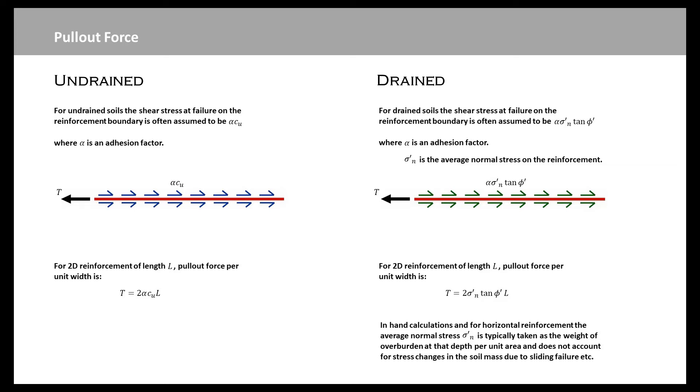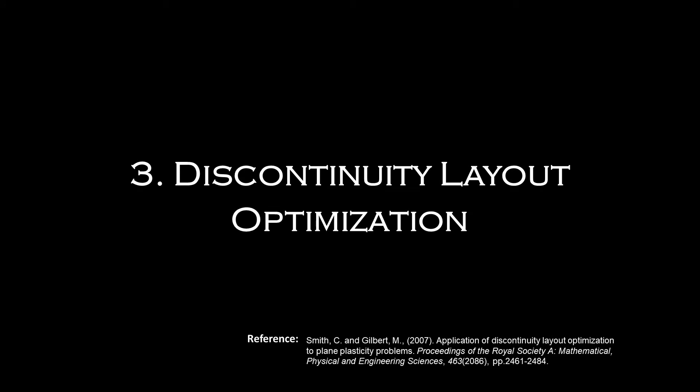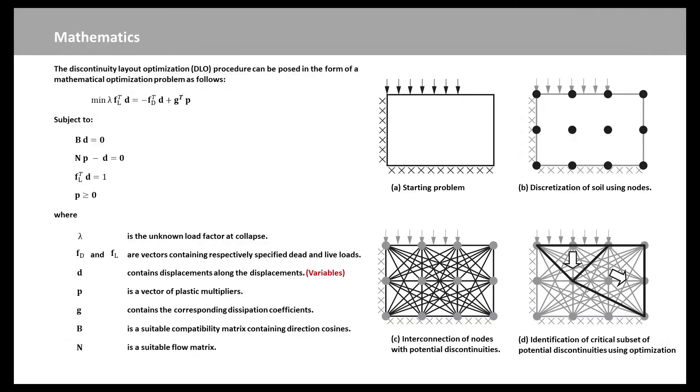So, we will look at how this type of modeling concept is applied in the discontinuity layout optimization. The discontinuity layout optimization upper bound limit analysis can be used to simulate geotechnical problems. Here, we call the method DLO. We will just recap quickly how it works. If we have a domain, a rectangular block of soil with a load on it, and fix the boundaries to the left and to the base, what we do is we populate the domain with nodes.